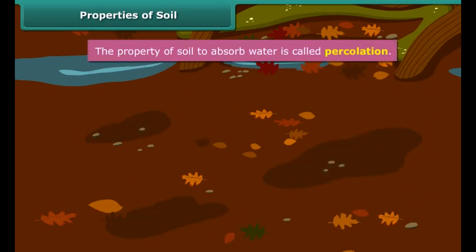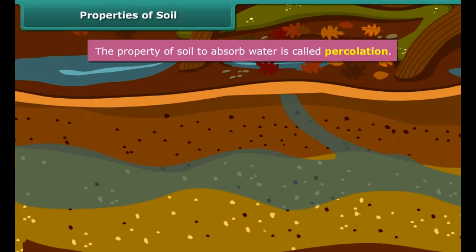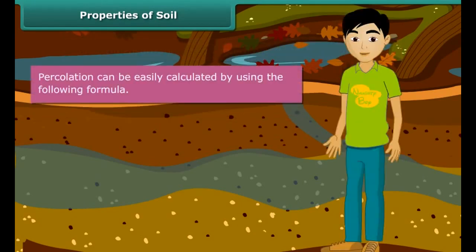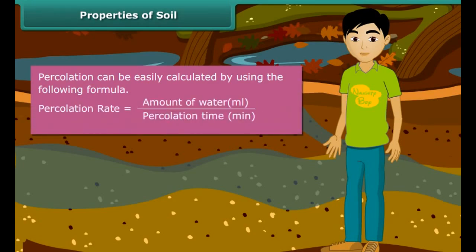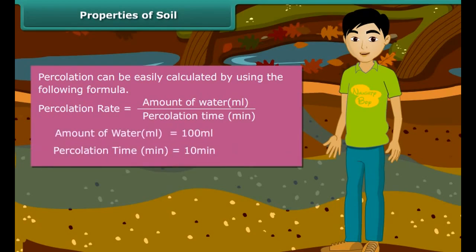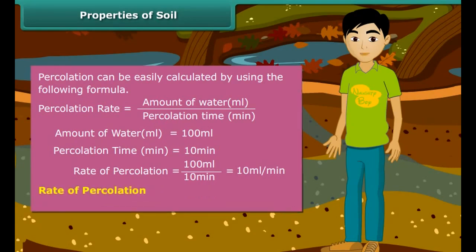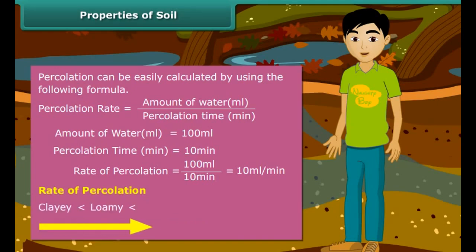Soil has the property to absorb water. This is called percolation of water by soil. Can we measure the percolation rate of water in different soils? Yes, rate of percolation can be easily calculated by using the following formula. Suppose that for a certain soil sample it took 10 minutes for 100 milliliters to percolate. Then, rate of percolation will be equal to 10 ml per minute. Rate of percolation is different for different soils. Sandy soil can absorb more water than clay and loamy soil.